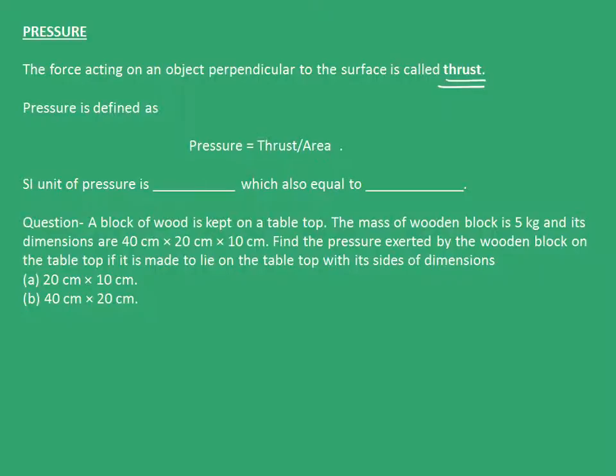Pressure is thrust upon area. The SI unit of pressure is pascal, which is also equal to newton per meter square because thrust is force (newton) and area is meter square. Now let's see a question. A block of wood is kept on a table top. The mass is 5 kg and its dimensions are given here.